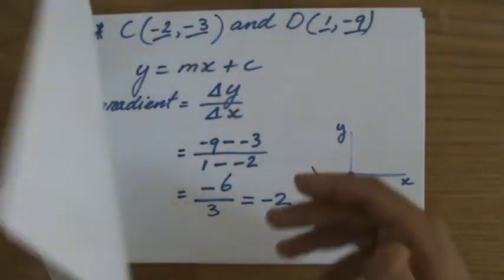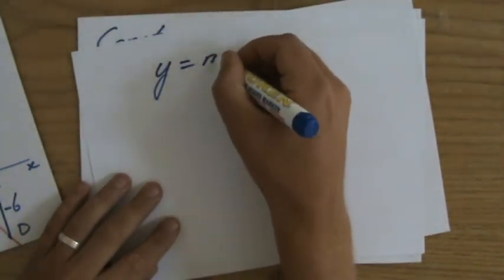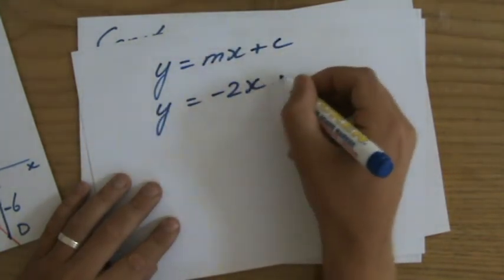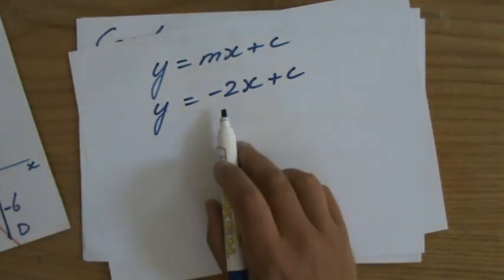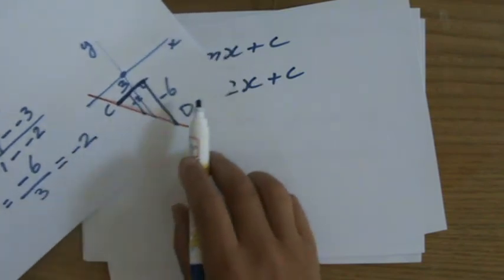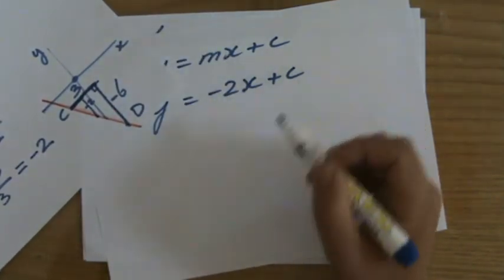Let me continue on another piece of paper. So I found the gradient. I calculated the gradient. We have the general equation y = mx + c. So y = -2x + c. So I substitute the gradient, which I calculated, in the equation. It's the coefficient of x.